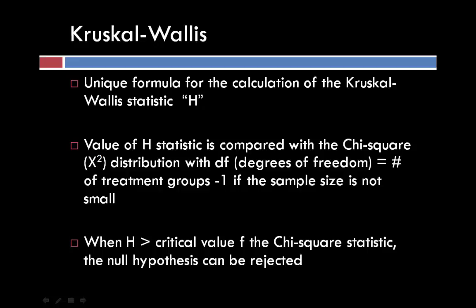We will be calculating degrees of freedom. This value of H is then compared with the chi-square distribution with degrees of freedom equal to the number of treatment groups minus one. When this H value is greater than the critical value of the chi-square statistic, then the null hypothesis can be rejected. This is a little different than what we saw with the Mann-Whitney U and the Wilcoxon Signed-Rank test, where in those cases the test statistic had to be less than the critical value in order for the null hypothesis to be rejected.